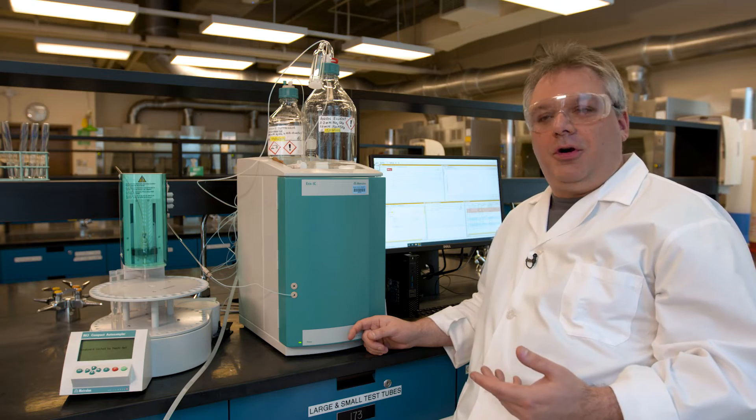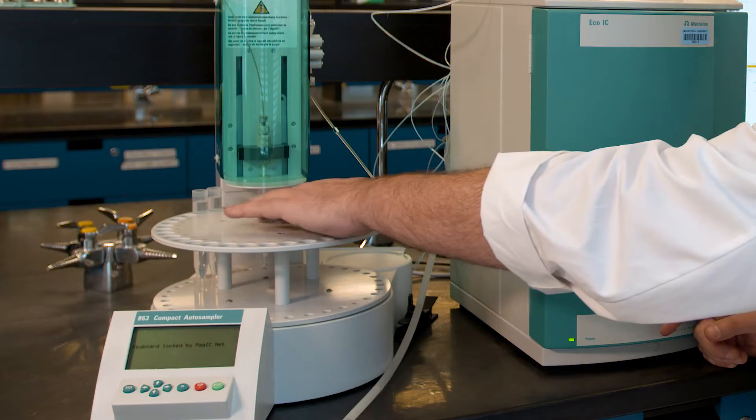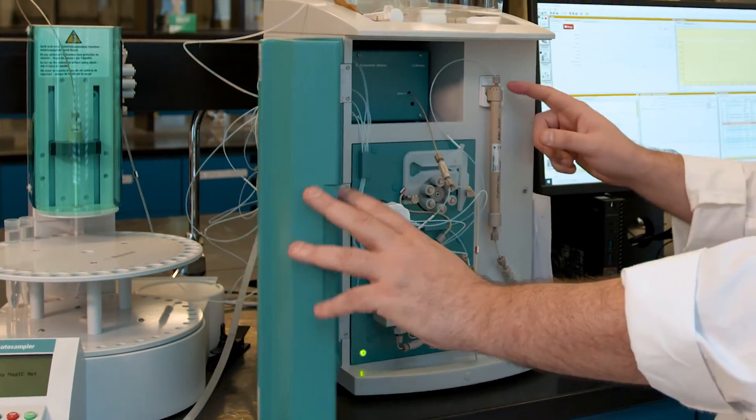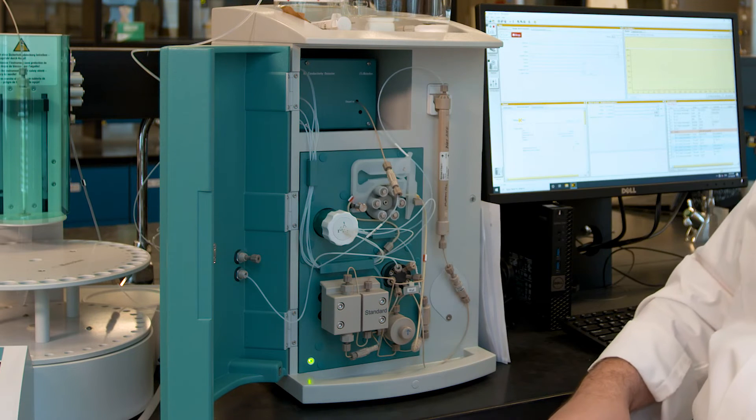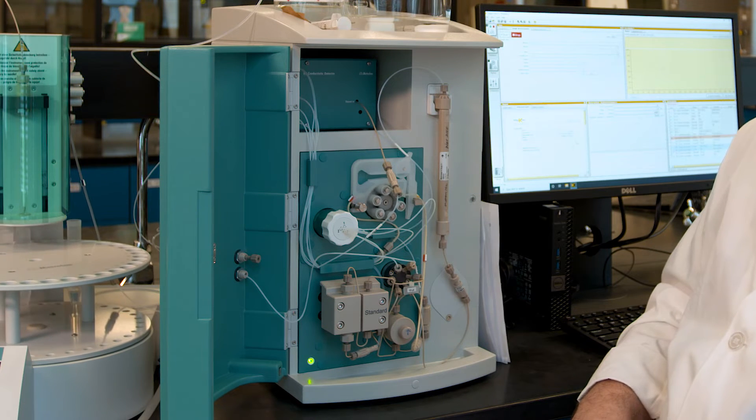So here is the ion chromatography machine. Over here is where the samples are. Inside here is the column that separates the ions itself, and in there is the detector that detects the ions after they go through the column. Let's take a closer look.